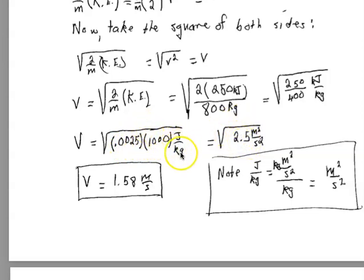A joule divided by a kilogram as shown here is effectively a meter squared per second squared. We put in the units and we take the square root, we get 1.58 meters per second. All right.